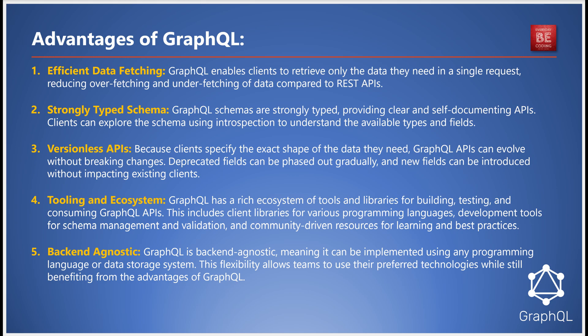Moreover, GraphQL is versionless — it allows APIs to evolve without breaking existing setups. Old fields can be deprecated smoothly and new ones introduced without disrupting current operations. The ecosystem around GraphQL is vibrant, filled with tools and libraries that cater to a variety of programming environments, whether you're managing your schema, validating operations, or building client applications. GraphQL doesn't care about your backend technologies — its agnostic nature means it can integrate seamlessly with any programming language or database, offering flexibility and power.